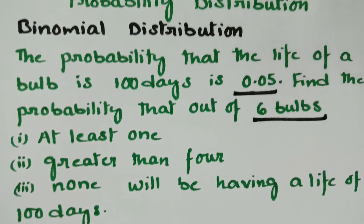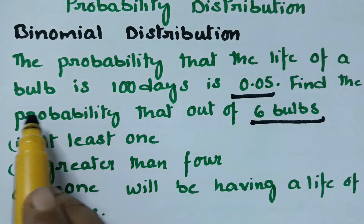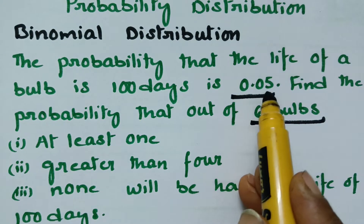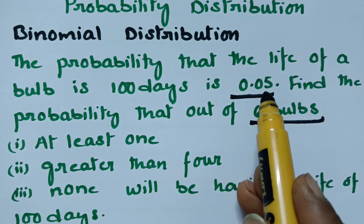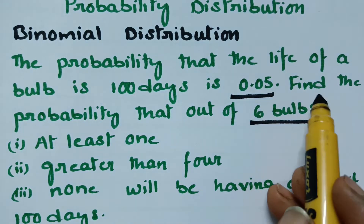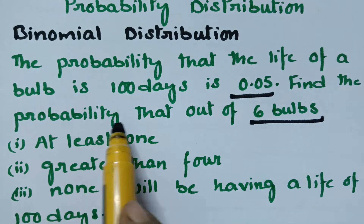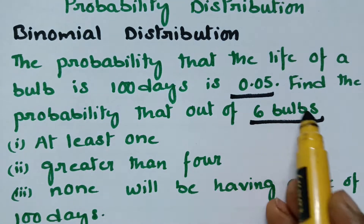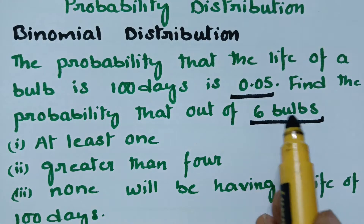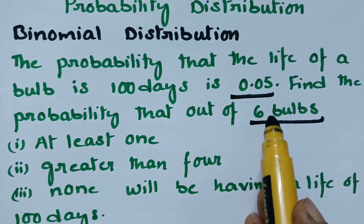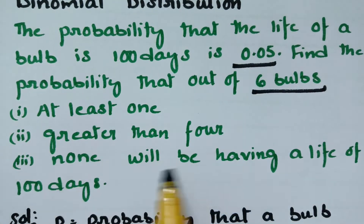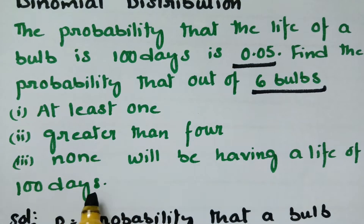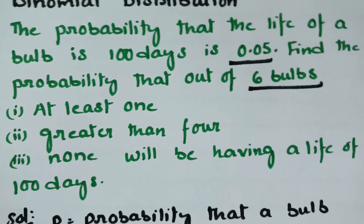What is given: the probability that the life of a bulb is 100 days is 0.05, so P is given as 0.05. We have to calculate the value of Q and find the probability that out of 6 bulbs — so n is equal to 6 — at least 1 will be having a life of 100 days. At least 1 means minimum 1, maximum 6.